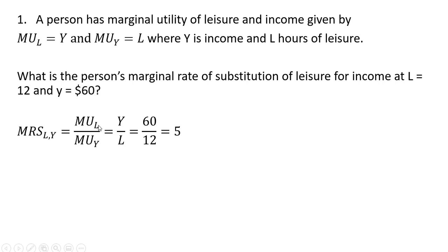The marginal utility of leisure is given by y and the marginal utility of income is given by l, so MRS = y divided by l. Substituting y = 60 and l = 12, we get an answer of 5. In other words, this person is willing to give up $5 of income for one more hour of leisure, holding utility constant.